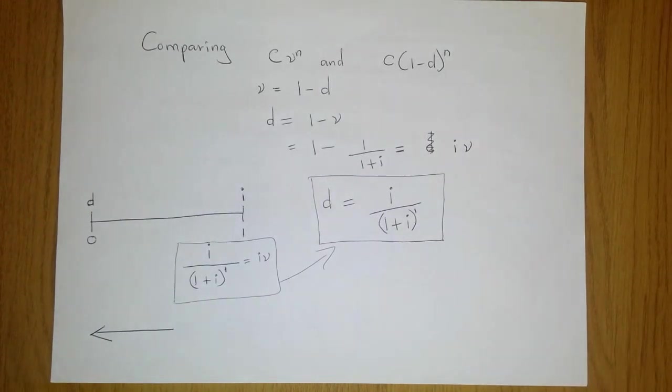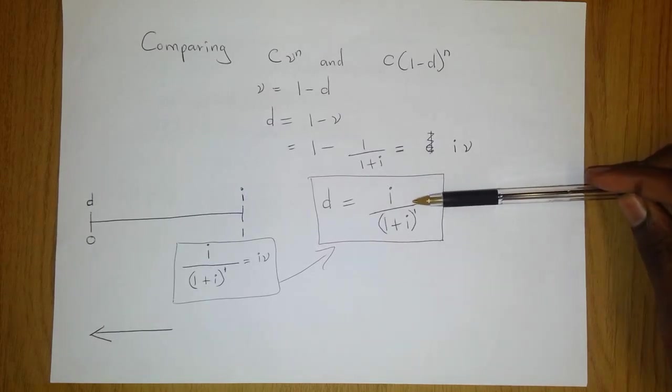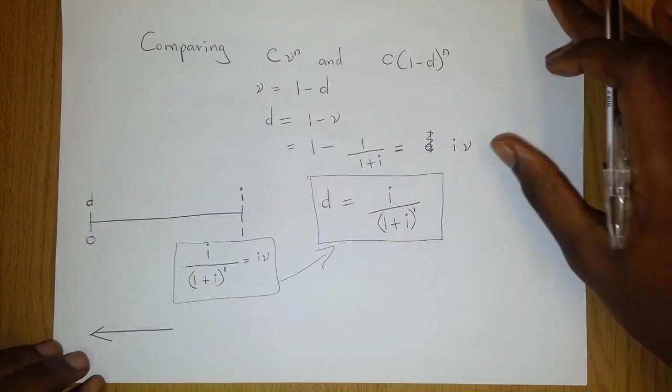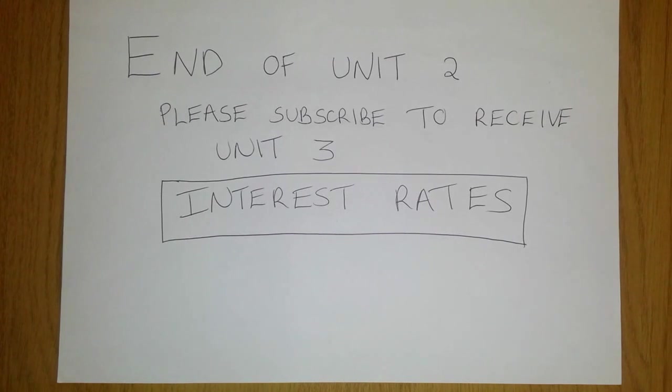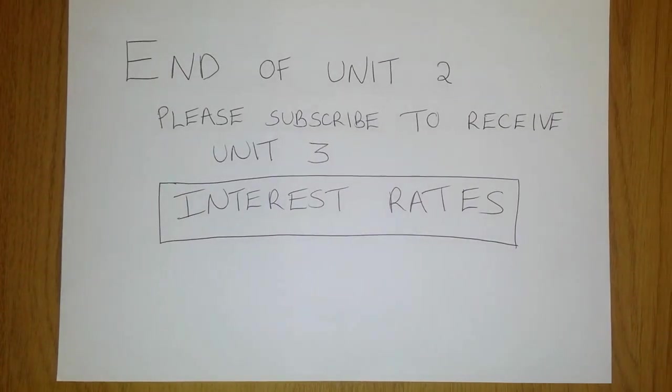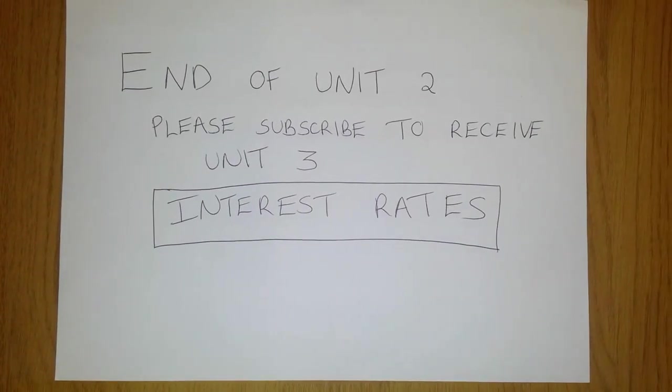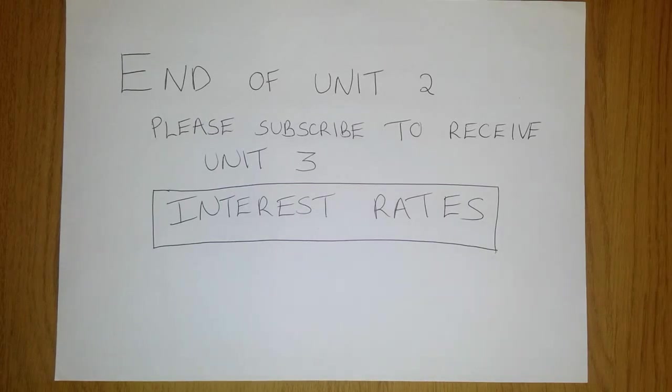Now if you look at this you find that it is the same as what we already have here. Interesting, isn't it? Now that is a way that we can reason out this formula that we have here. And with that we have come to the end of unit 2. Please subscribe to receive videos from unit 3. Unit 3 is going to cover interest rates. Once again thank you very much for visiting my channel. I am the Actuarial Guy.